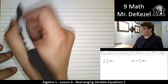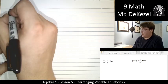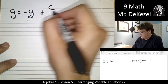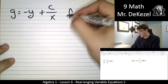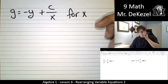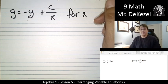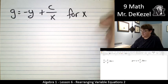Let's do another one. This one is a little bit more complicated. g equals negative y plus c over x. And I'm going to show you in this one a trick that you will use, hopefully, in algebra for the rest of your life. It's very useful. I use it all the time.